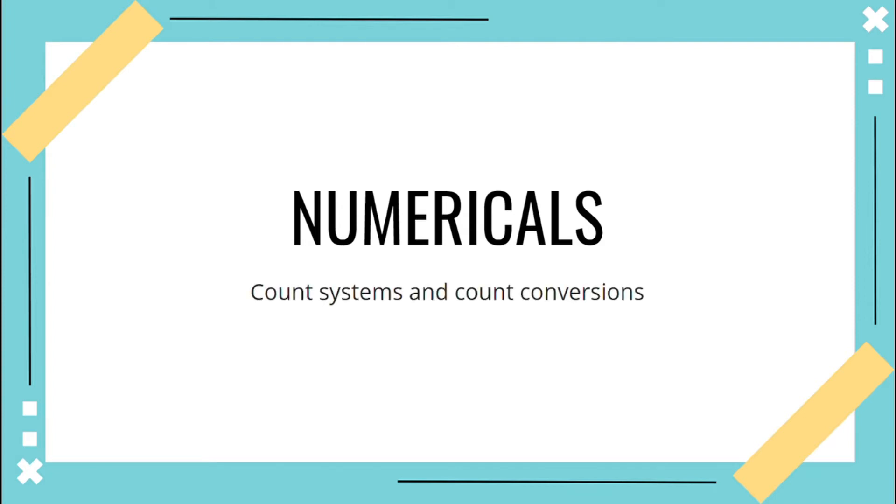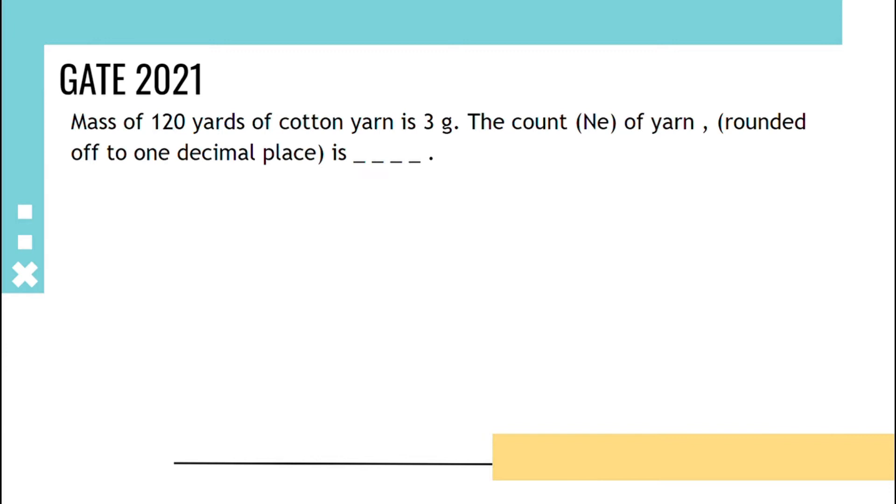Hello guys, welcome to TIPS, a platform for textile problems and solutions. Now we are going to learn some calculations on count system and count conversions. First problem is: mass of 120 yards is 3 grams, we have to calculate English count.